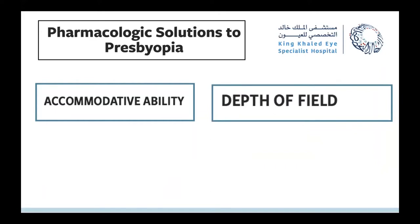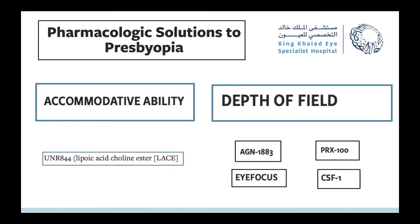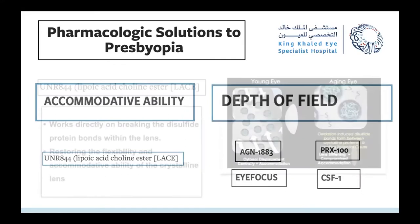Medical treatment with drops has focused on two things: accommodative ability and depth of field. For accommodative ability, we try to regain the dynamic process of the lens by softening it. There is a molecule — lipoic acid cholinesterase — still under research as a proof of concept for lens softening. For depth of field, we use miotics, which work via a pinhole effect, allowing independent function from glasses. Each company has its own molecule with its own variation.